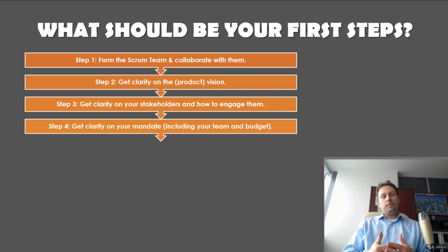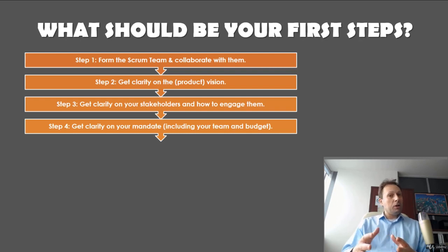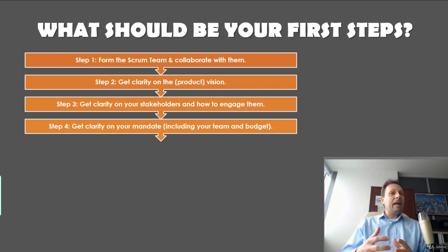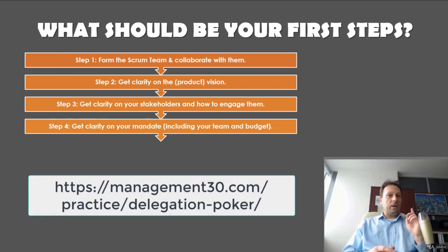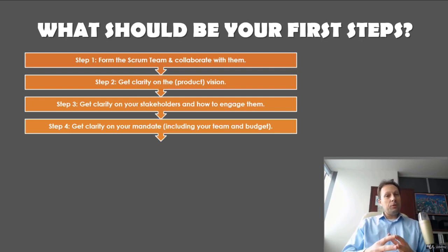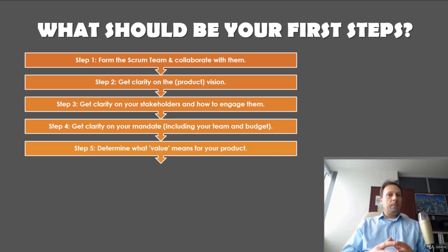Step four: get clarity on your mandate, including your team and budget. Now that you know your most important stakeholders, involve them to define your mandate. You may be appointed by a sponsor, management, or the business — but what are your responsibilities and what is the mandate that comes with them? One tool that can help is Delegation Poker and Delegation Board. Use Delegation Poker to clarify who is responsible for what and to what level — it encourages employee engagement through controlled self-organization and clarifies decision-making.